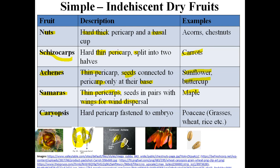In the case of caryopsis, the pericarp is hard but completely attached to the embryo, so we cannot distinguish between the seed and the fruit. All members of the Poaceae family — such as grasses, wheat, rice, and corn — have a fruit known as caryopsis. Another name for caryopsis is grain.